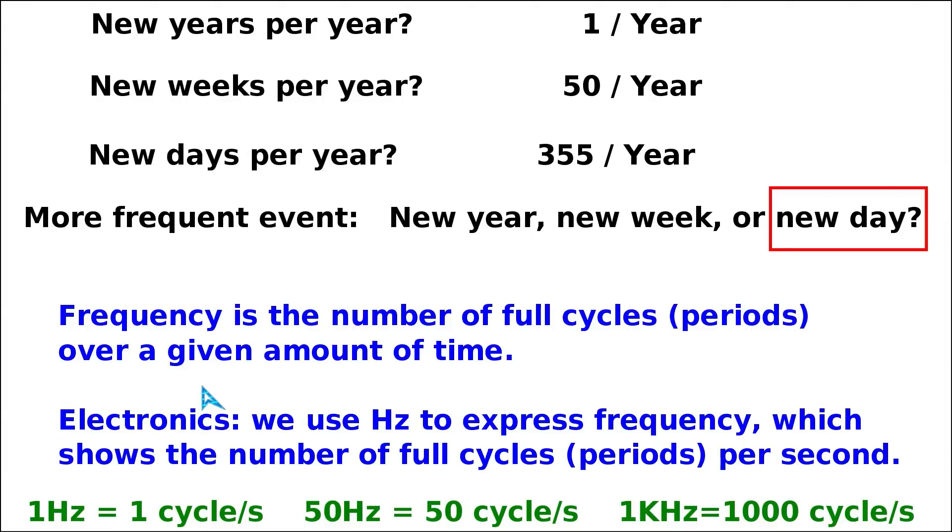In electronics, we're dealing with different processes where the period is much shorter, so we cannot think in terms of years. We need to take a shorter amount of time. As base time, we use a second in electronics, and we look at within a second how many times we fully carry out a cycle or period. This number is what we call hertz.